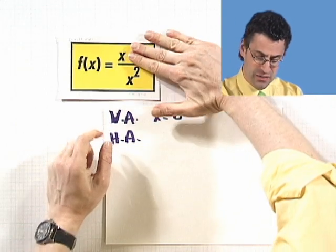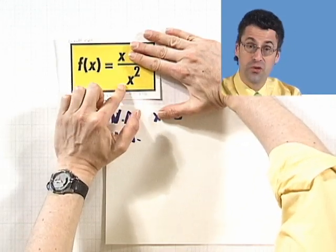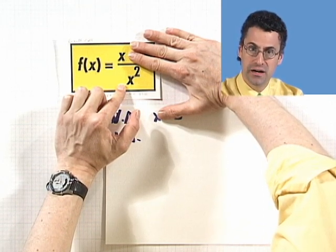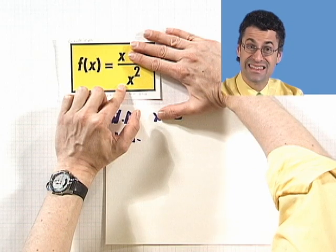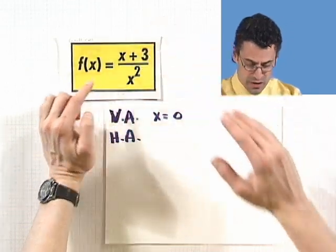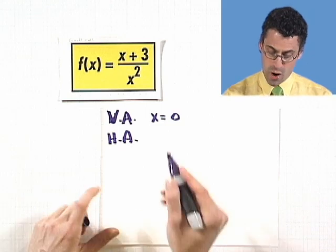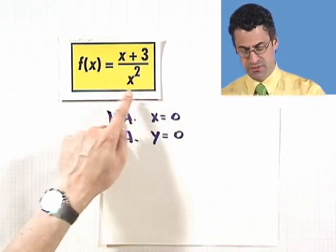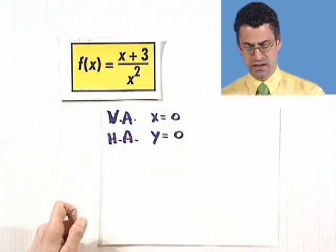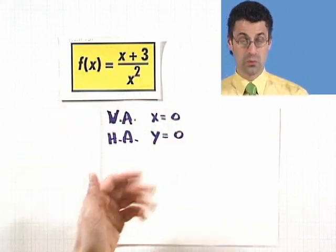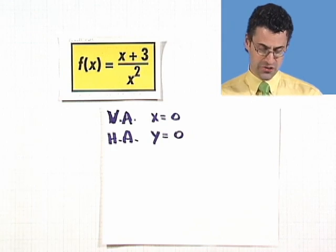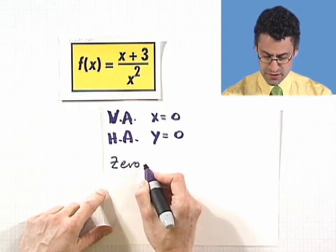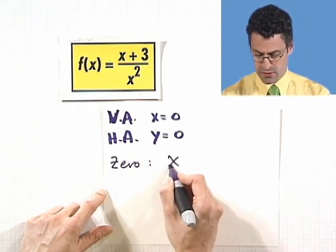Think about the terms that really matter as x gets big. The plus 3 doesn't matter, it's really just x. x over x squared simplifies to 1 over x. And as x gets bigger and bigger, 1 over x gets smaller and smaller and approaches zero. So we have a horizontal asymptote at y equals zero. In general, if the degree of the denominator is greater than the degree of the numerator, you always have a horizontal asymptote at y equals zero. The zero is at x equals negative 3.